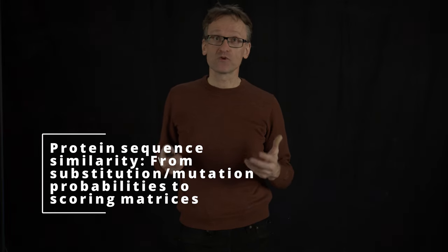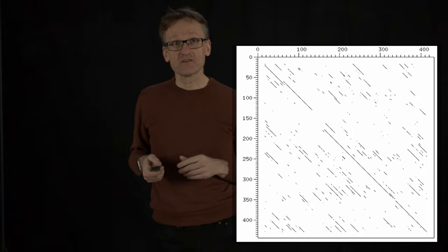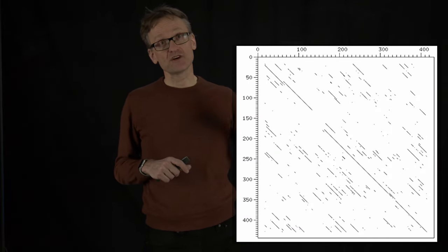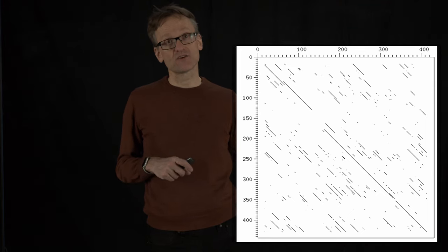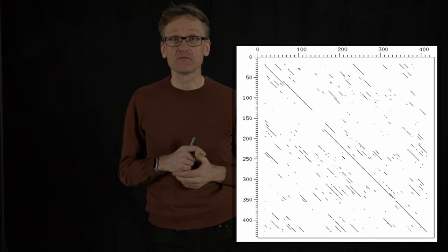In principle we could use dot plots to characterize protein structure too. This is a real one of hemoglobin alpha versus hemoglobin beta chains. You see some very long lines along the diagonal and then lots of smaller lines that are more or less random matches.